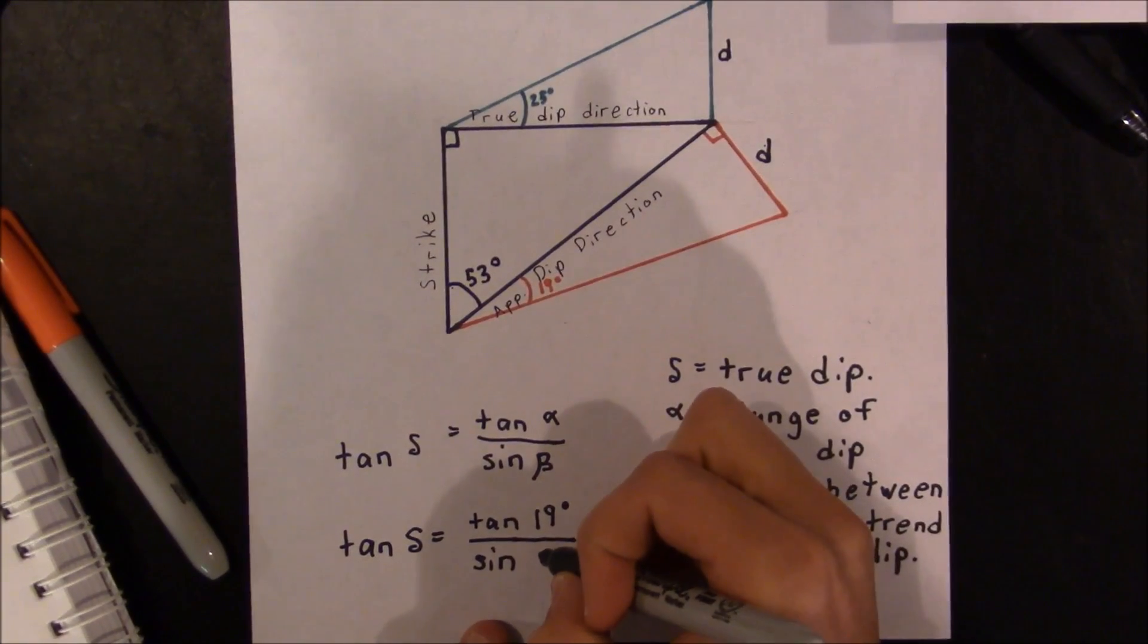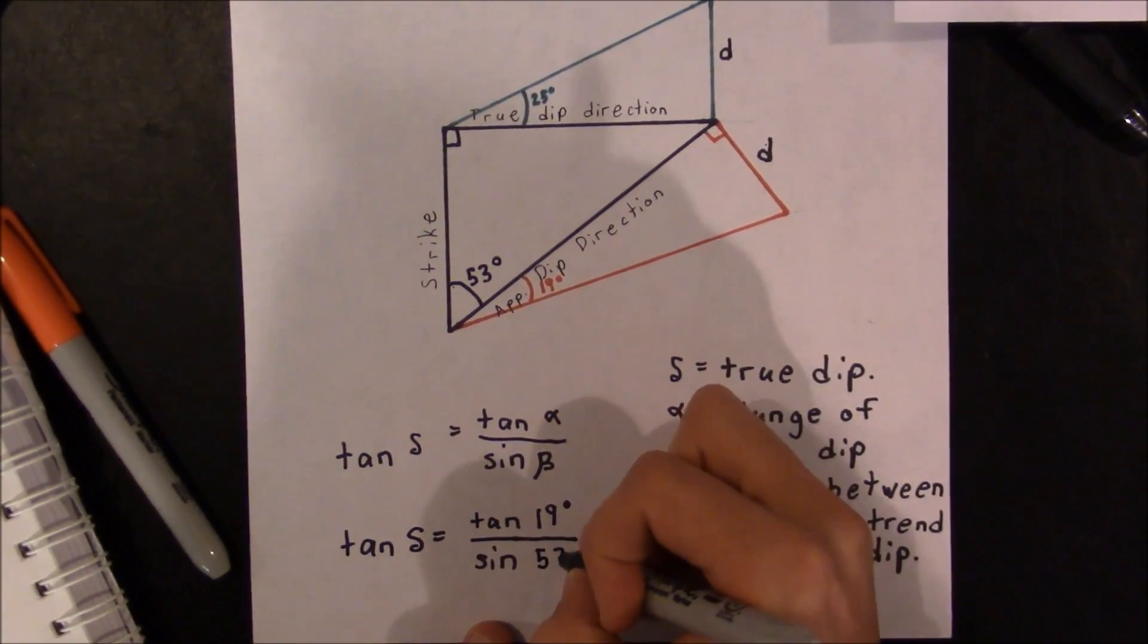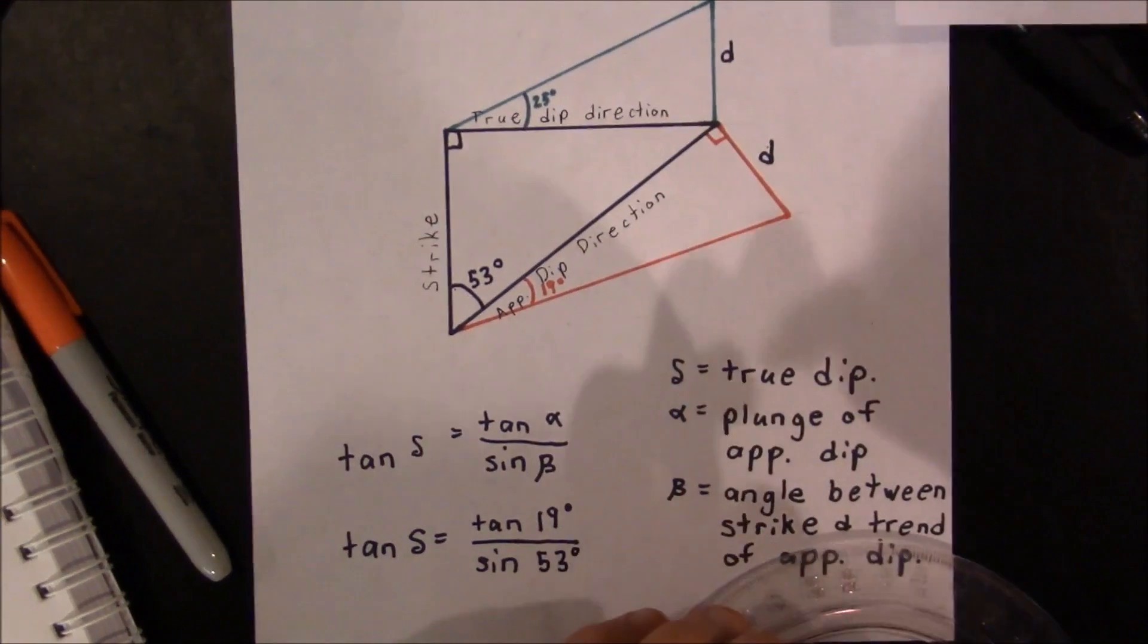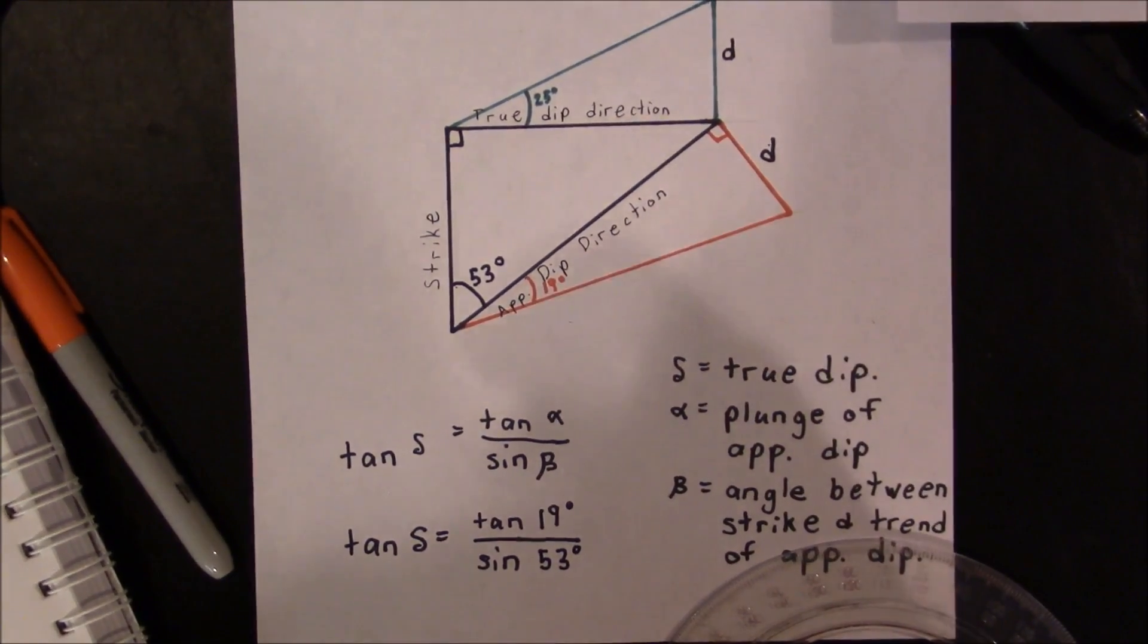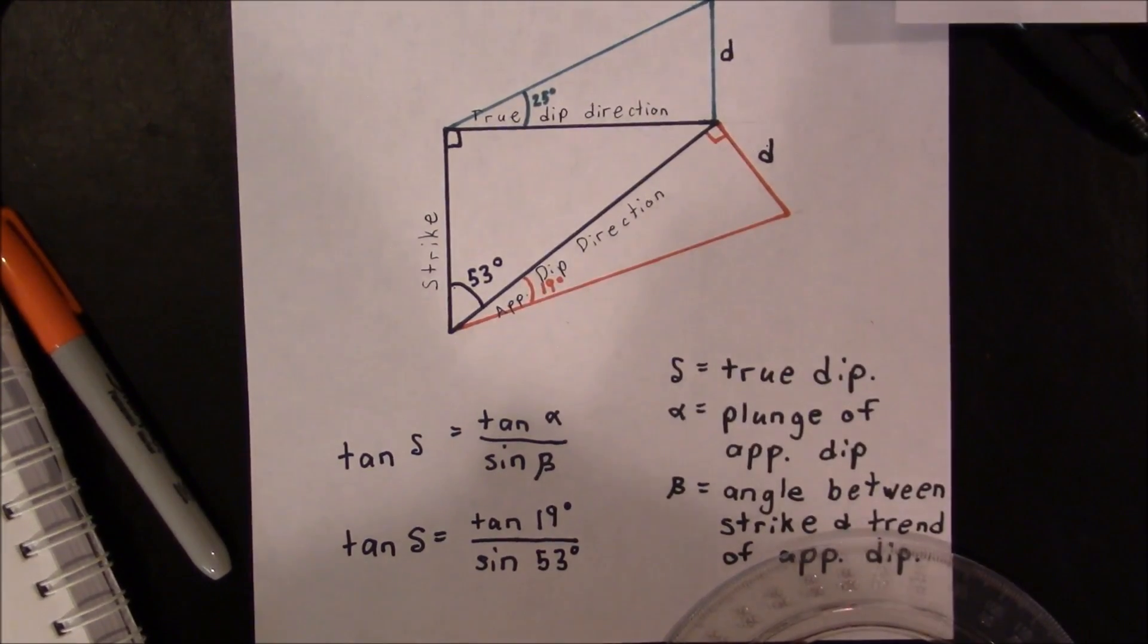and the angle between the strike of the plane and the trend of the apparent dip is going to be this angle right here. And this angle happens to be, looks like about 53 degrees. Okay, so if we plug this in,